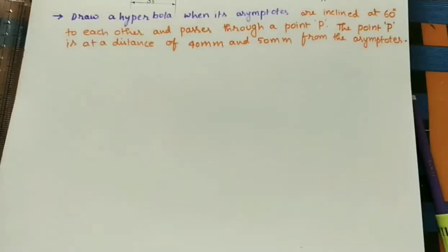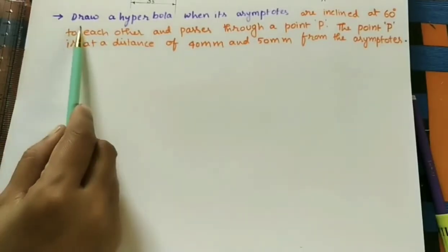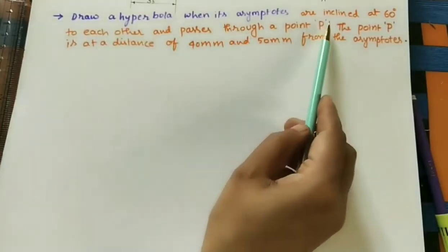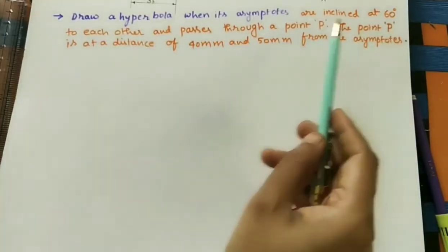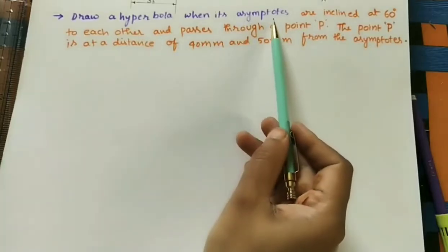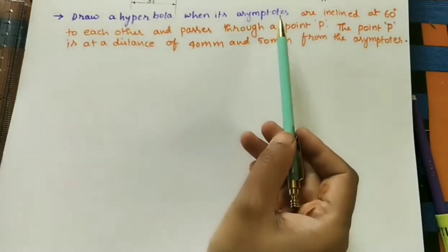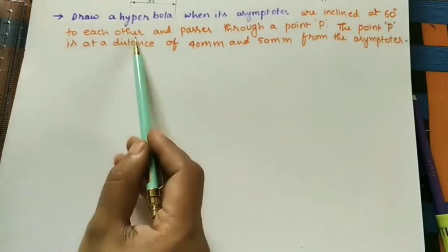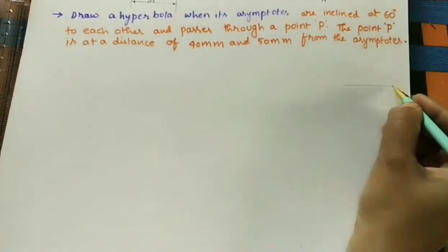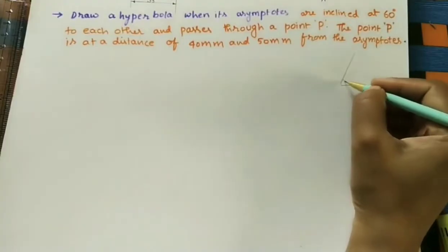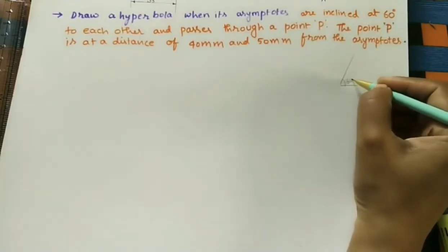Let us draw a hyperbola using the asymptote method. The given question is: draw a hyperbola when its asymptotes are inclined at 60 degrees to each other. Asymptotes are axes like the x-axis and y-axis, but these two axes are making 60 degrees to each other — one is horizontal and the other makes 60 degrees with it.